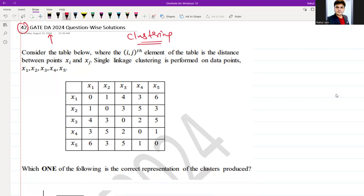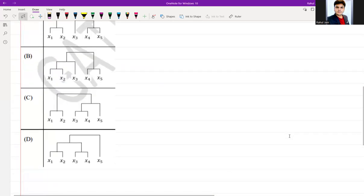Consider the table below where the i,j-th element of the table is the distance between xi and xj. We are using single linkage clustering on this dataset x1, x2, x3, x4, x5. Which one of the following is the correct representation of the cluster produced?